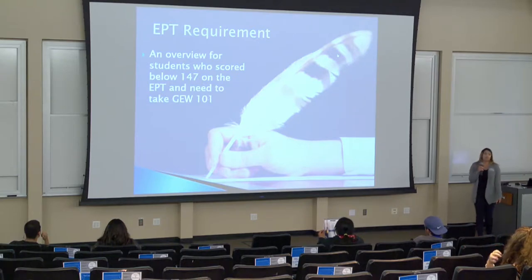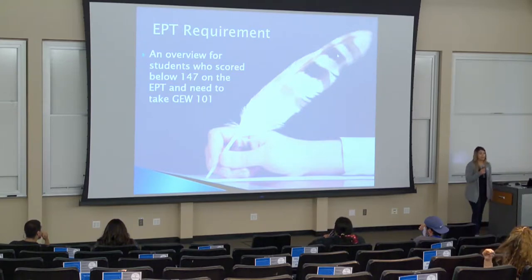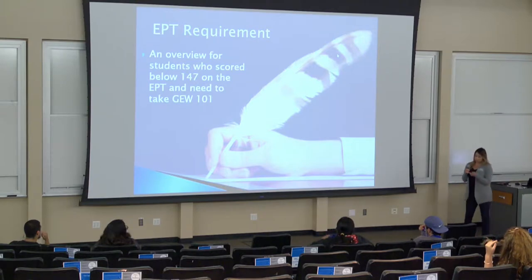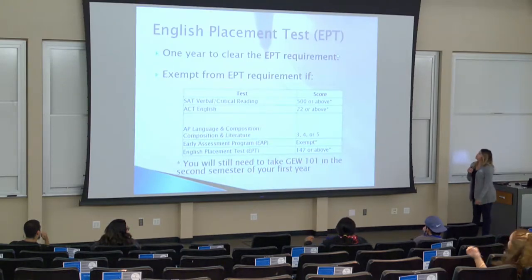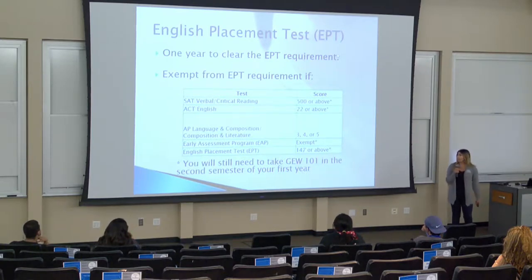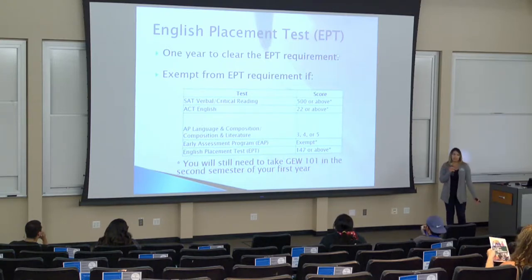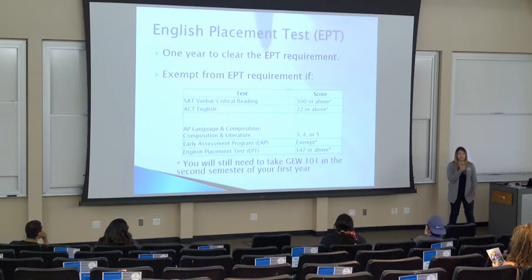The EPT requirement — what is the EPT requirement? It's an overview for students who scored below 147 on the EPT: you need to take GW 101. For whoever needs to meet the EPT requirement, you have one year to complete it, which means you will be taking GW in the fall semester.